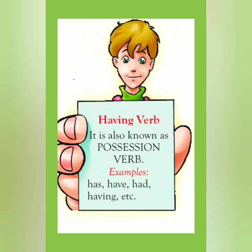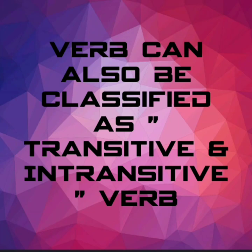Having verb is also known as possession verb. Examples: has, have, had, having, etc. It denotes the belongingness or the position of the subject in a sentence. For example: 'I have a pen' — here the pen belongs to 'I', so 'have' denotes that verb.